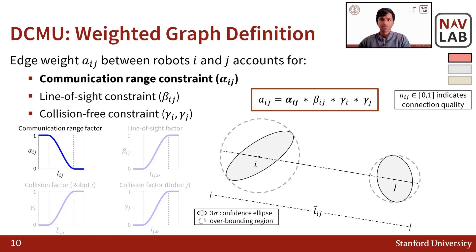For the weighted graph, we want to account for uncertain robot positions arising from motion and sensing uncertainties, and also account for constraints such as the communication range, the line of sight, and collision avoidance. To account for the uncertain robot positions, we consider an overbounding disk around a three-sigma confidence ellipse for each robot. For the edge weight between any two robots, we define it as a product of four factors, where each factor varies from 0 to 1 and represents a different constraint. For the communication range constraint, we consider a distance measure that accounts for uncertainty in robot positions. When the distance measure is small, the communication range factor alpha equals 1, and as the measure grows, alpha decreases.